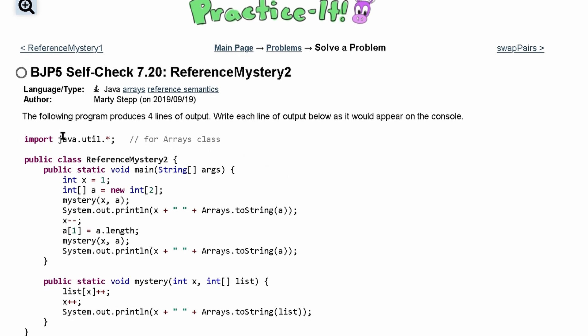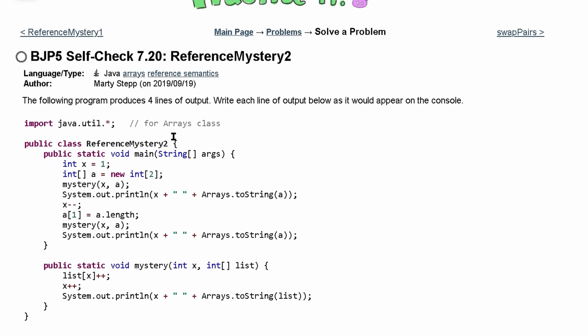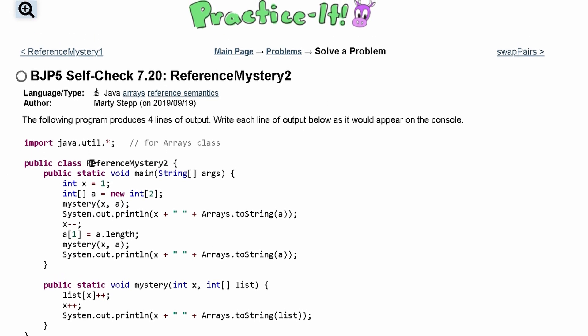So we have an import for our array class, we have our public class ReferenceMystery2, we have a main method, and then we just have a function right here. So let's go through this and let's find out what we print.